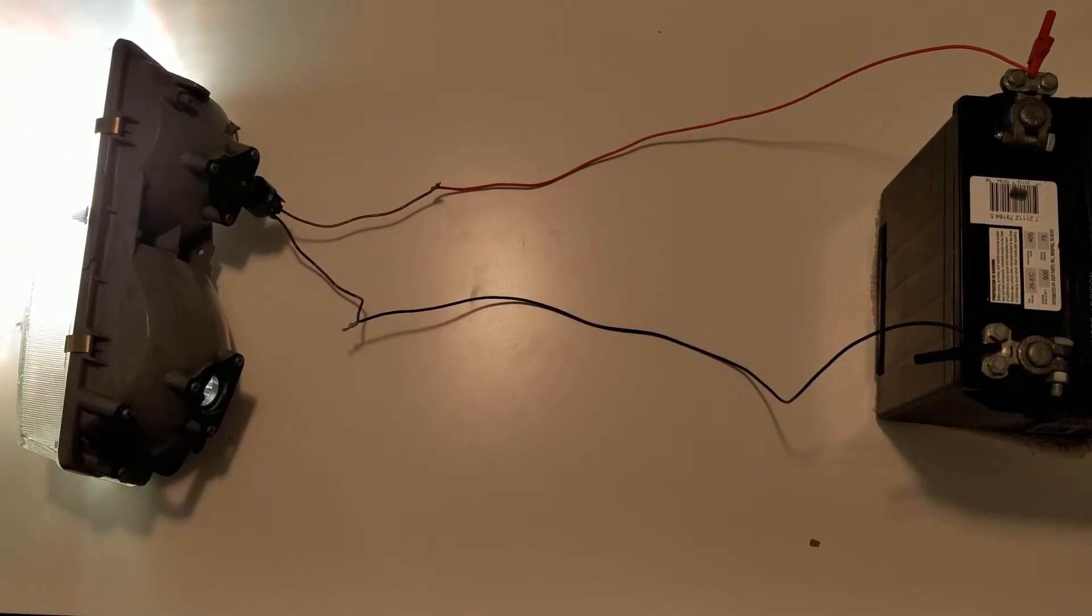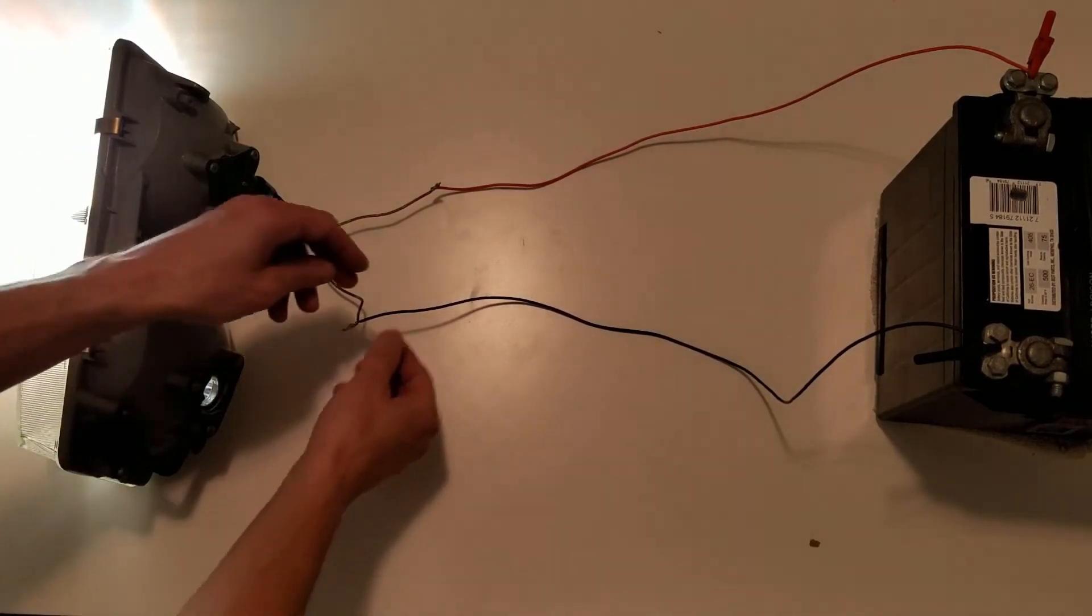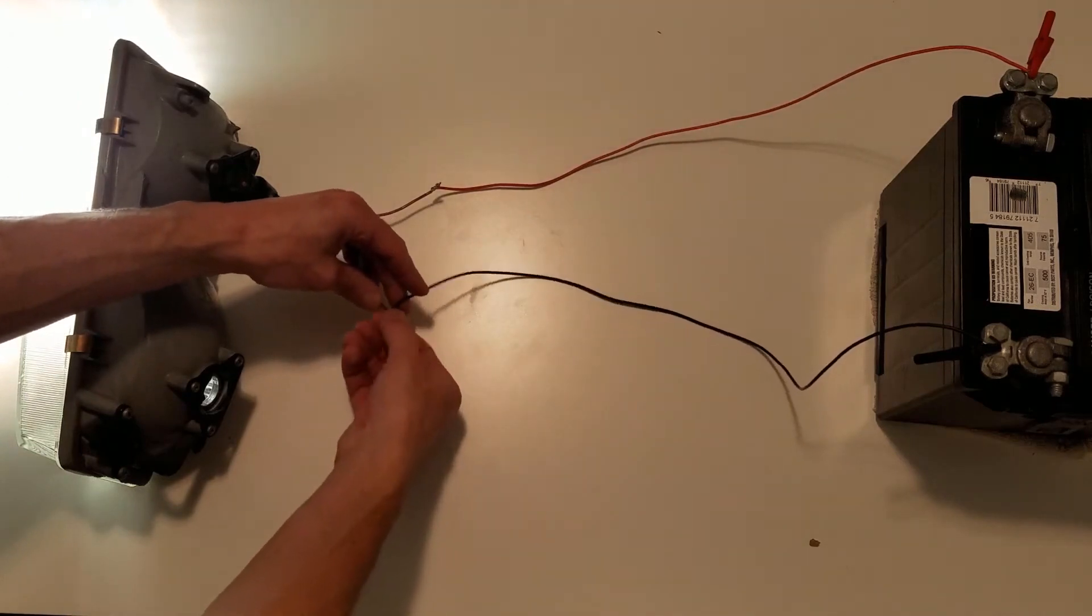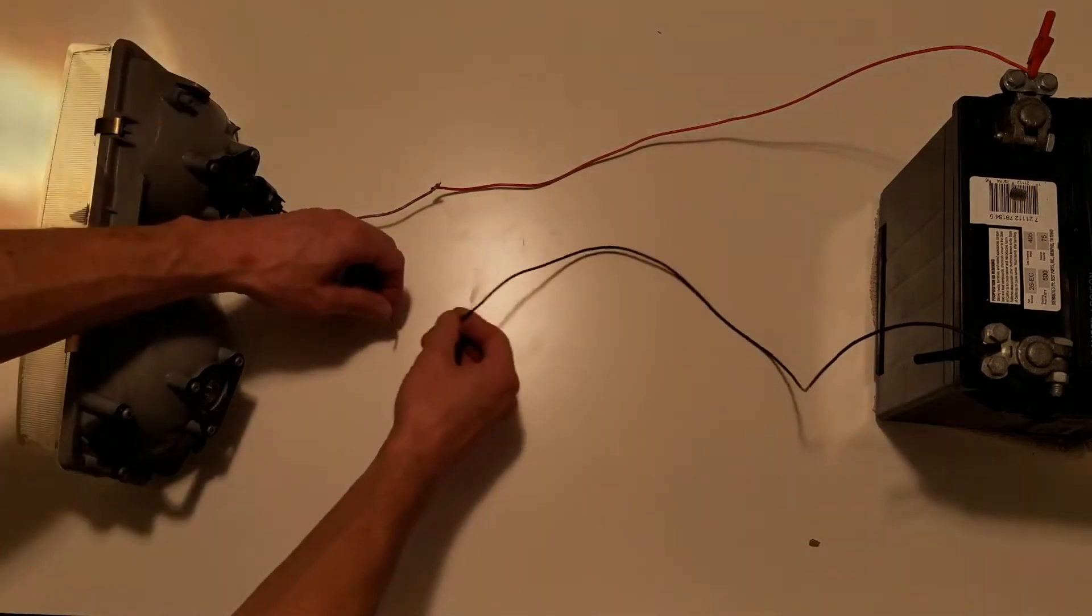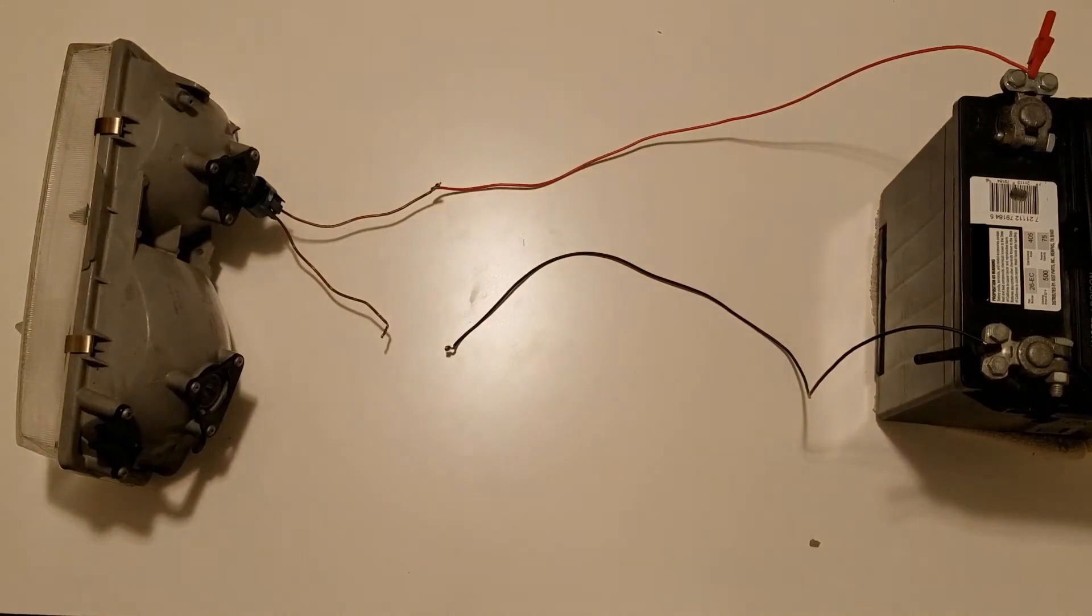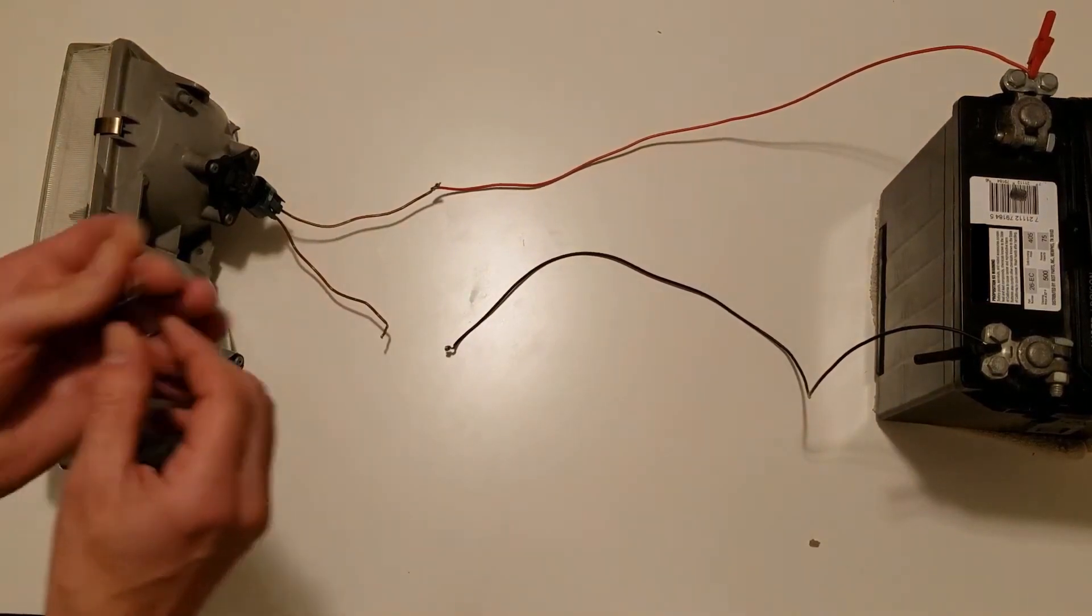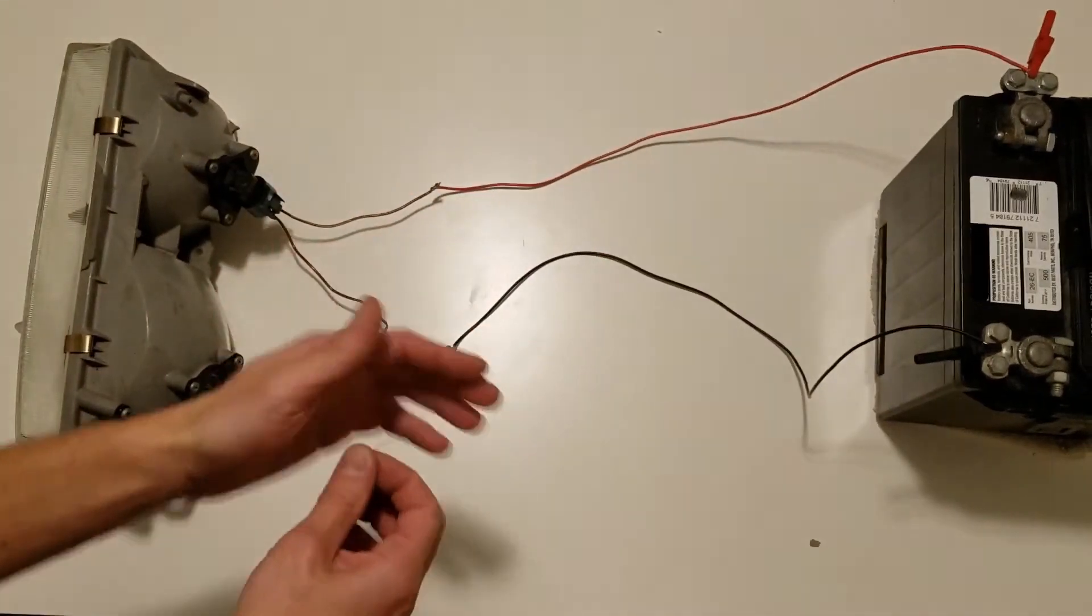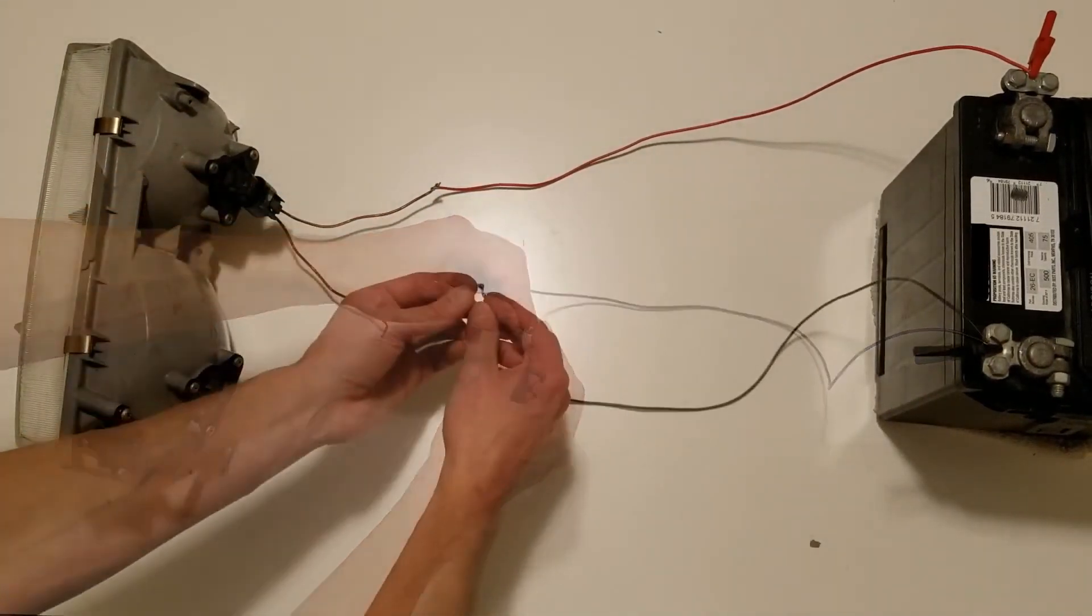Now what I'm going to do is introduce high resistance into this circuit. I'm going to untwist my negative side. Right here is a 10,000 ohm resistor, so I'm going to insert that in series here.